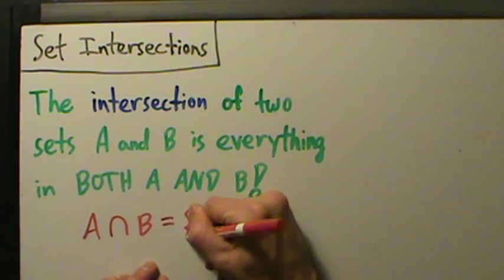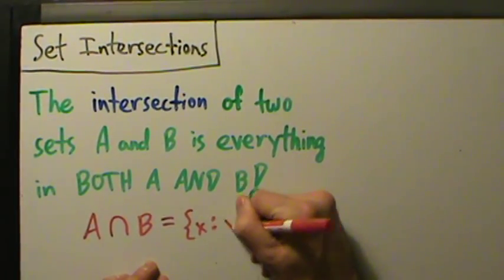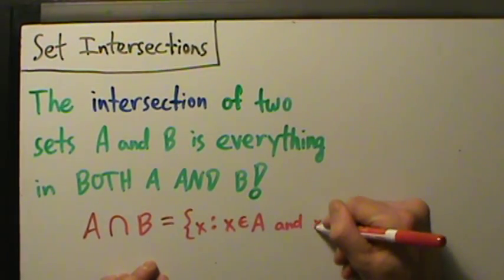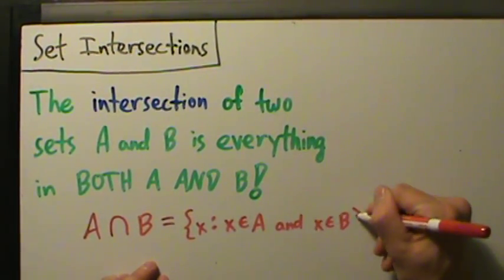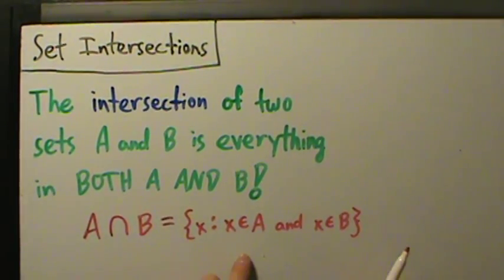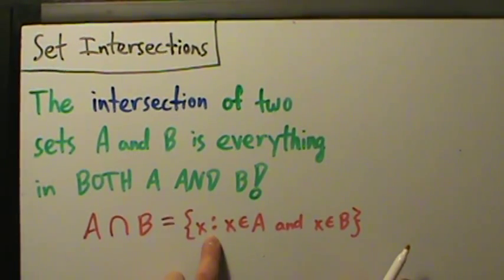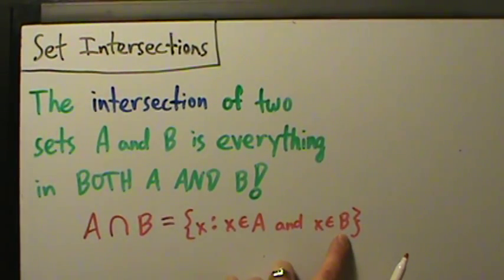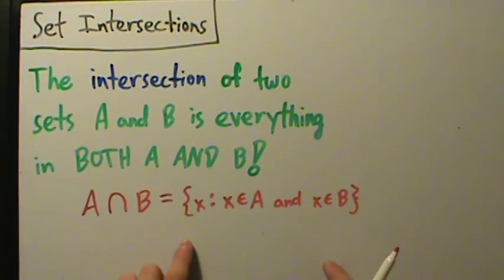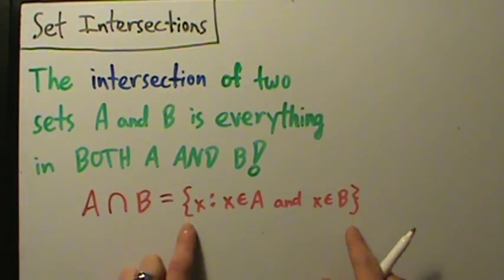A intersection with B is all X such that X is in A and X is in B. This is set-builder notation, using the element-of notation we talked about in earlier videos. This says the set of all X such that X is an element of A and X is an element of B. The intersection really is a set, so just like with unions, you've got to have the curly braces there.